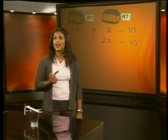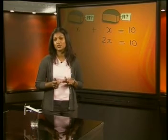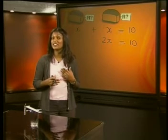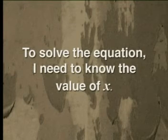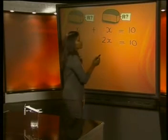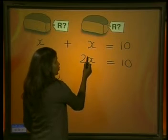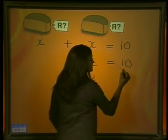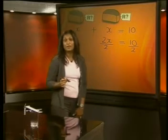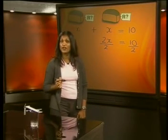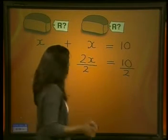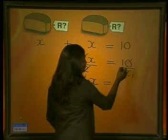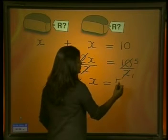But how do we get to our answer of five rands? We could simply think: what number times two gives me ten? The answer is five. Another way of solving is: to find the value of x, I need one x on this side. In our example we have two multiplied by x, so I divide the left-hand side by two. To keep the balance, I also divide ten by two. The twos cancel off, so we end up with x equals ten divided by two, which means x equals five.